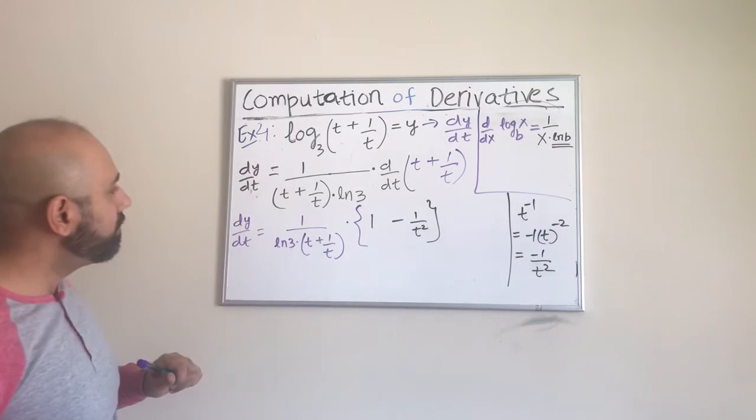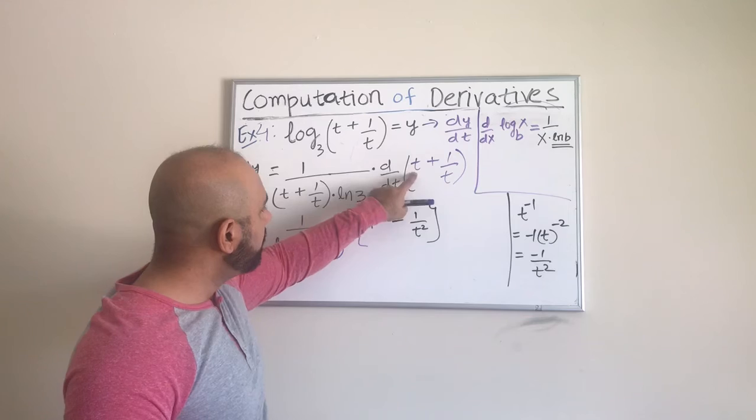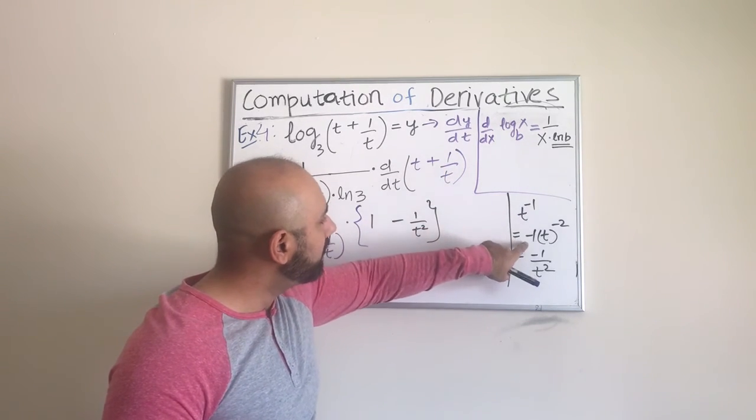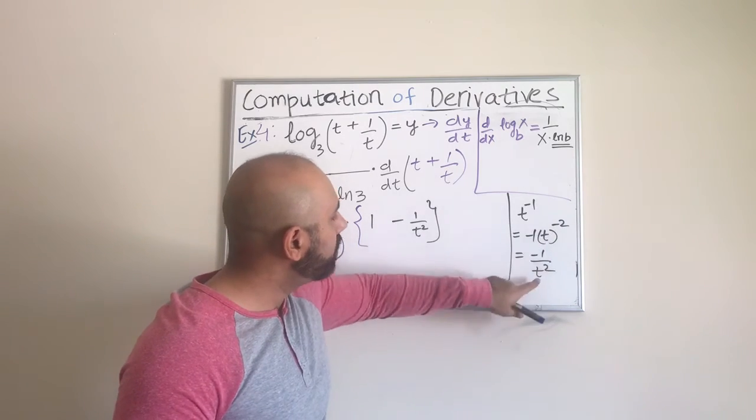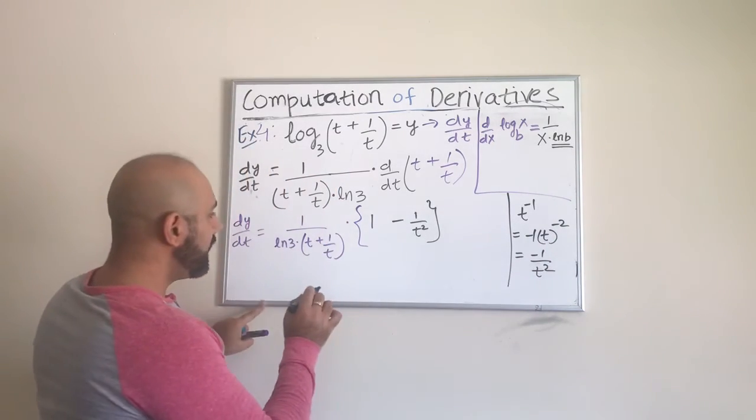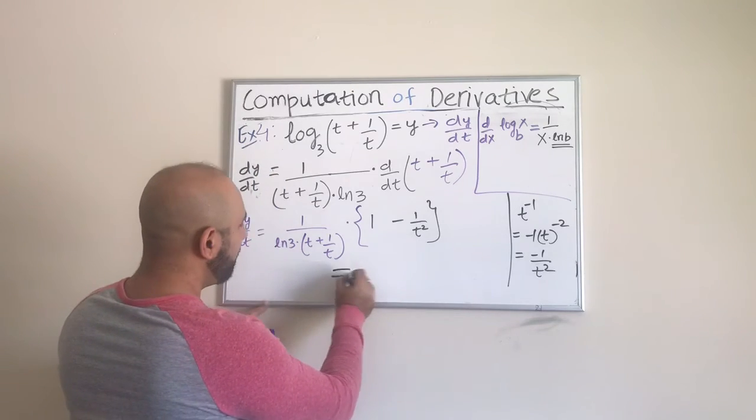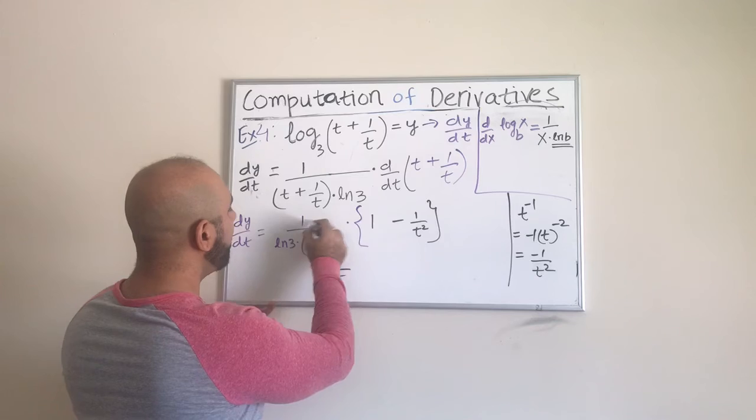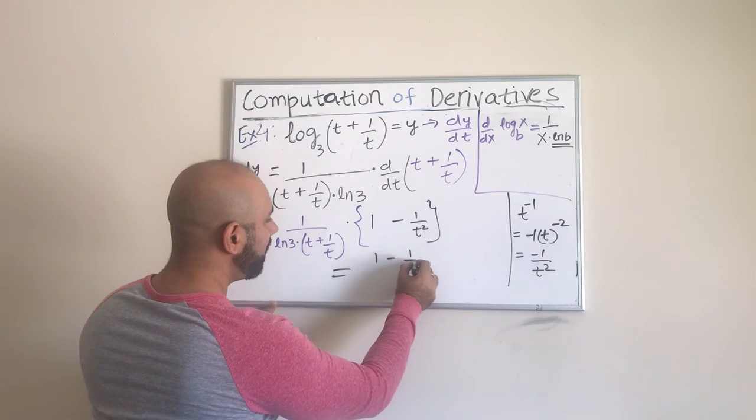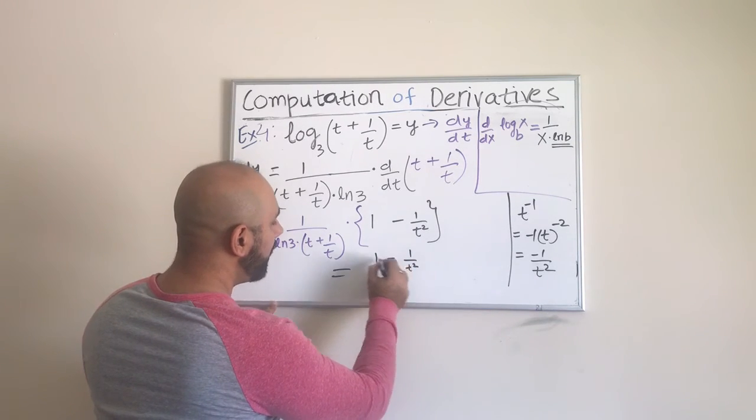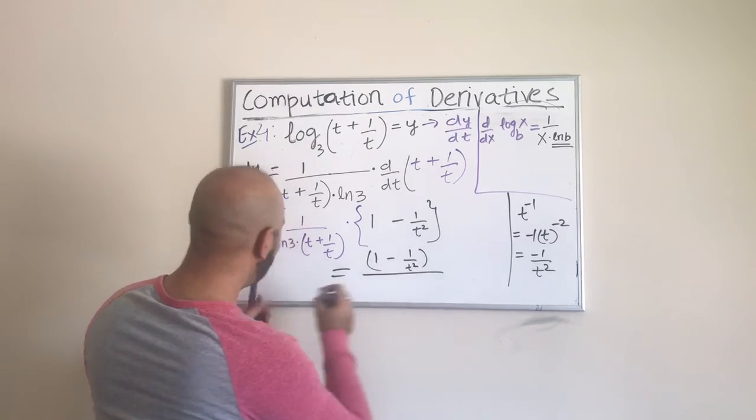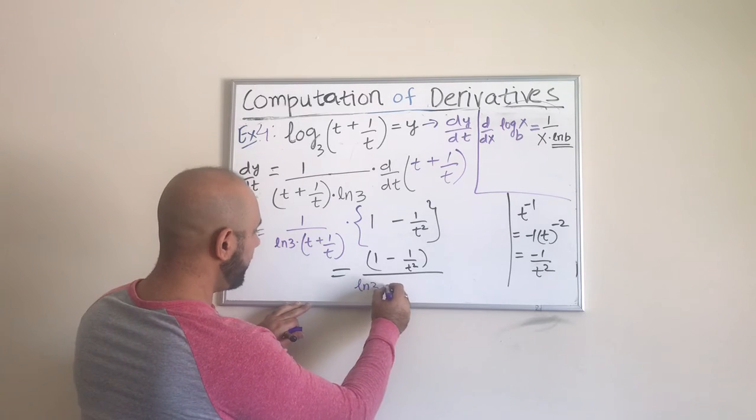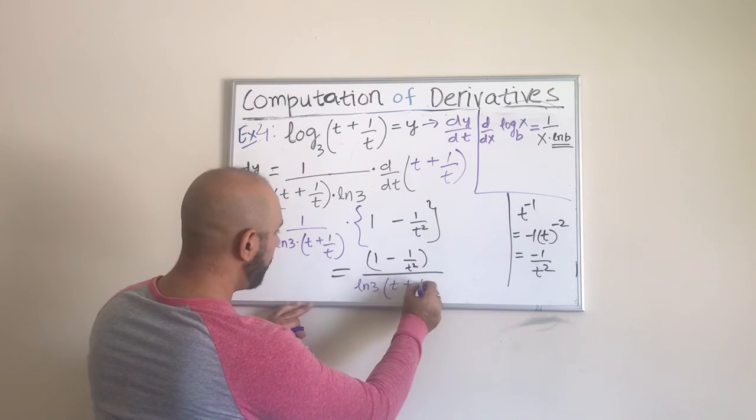I think that would be it. Let us make sure we didn't make any mistakes. Derivative of t with respect to dt is 1 and to find the derivative of this, it's t to the power negative 1. We bring the negative 1 up here using the power rule. We get this. So we can write it in a slightly different form. This is totally fine if you want to leave it like that as a final answer or you can, because it is multiplied to the numerator, you can also think of this as 1 minus 1 over t square. You can put it in parentheses and this whole thing is divided by whatever. I'm just rewriting it. I'm not really changing anything. Times t plus 1 over t.